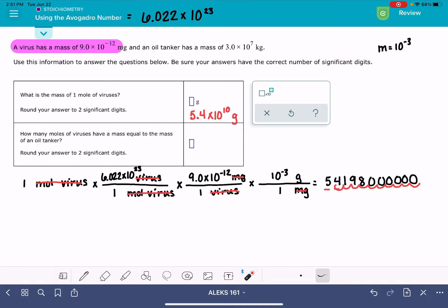Now, the second part of the question asks us how many moles of viruses have a mass equal to the mass of an oil tanker. And it's telling us in the problem that an oil tanker has a mass of 3 times 10 to the 7 kilograms. The oil tanker part of this problem, I feel like, makes it kind of tricky.